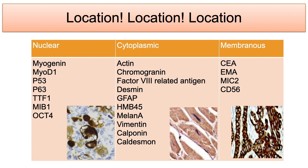Distinctive granular cytoplasmic reactivity is typical of AMACR, HepPar1, and Napsin A. Also notable is CD30 in ALCL. It should also be noted that there are some instances where the lack of immunohistochemical expression is significant, such as loss of INI1.